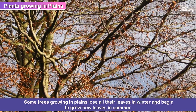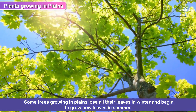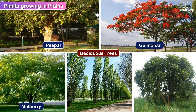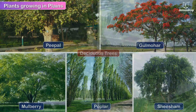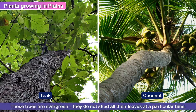Some trees growing in plains lose all their leaves in winter and begin to grow new leaves in summer. Such trees are called deciduous trees. Peepal, gulmohar, mulberry, poplar and shisham are some deciduous trees. Teak and coconut trees grow in the hot and wet areas of the plains and are evergreen. They do not shed all their leaves at a particular time.